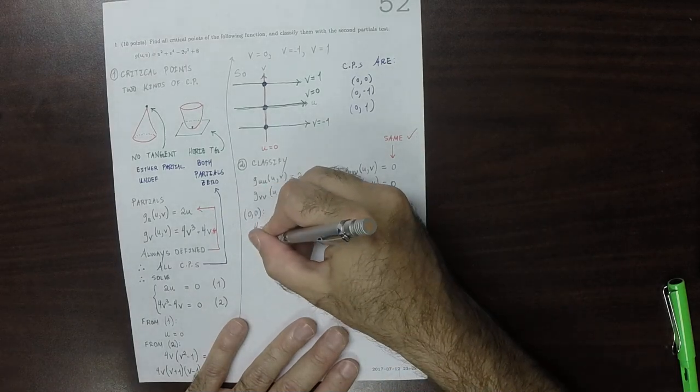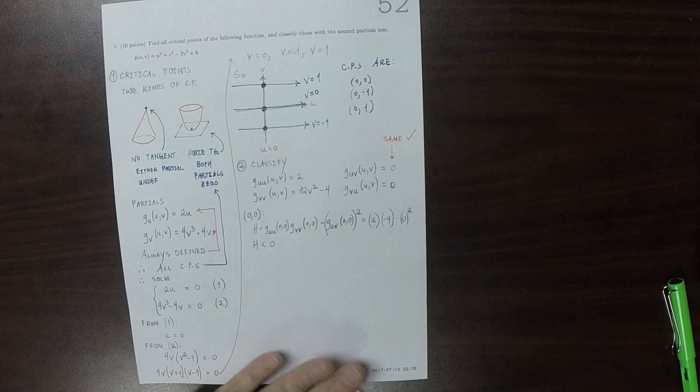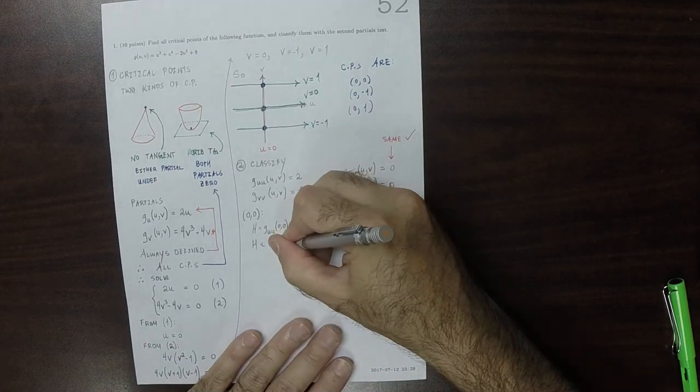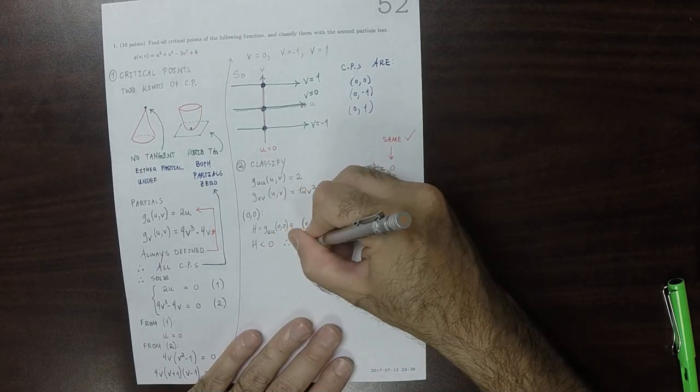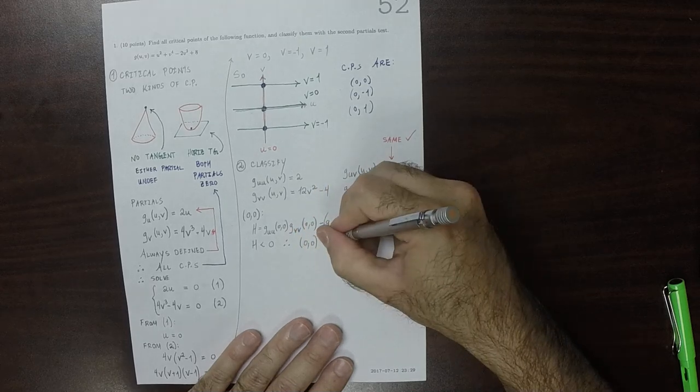So minus zero squared. And that's negative eight, which is negative. So H is negative. So as a result, the origin, zero, zero, is a saddle.